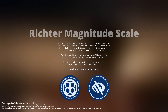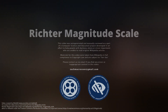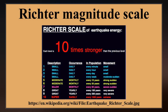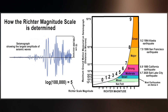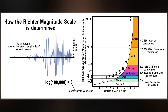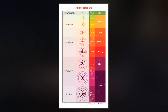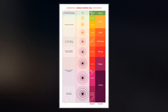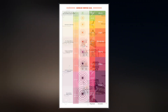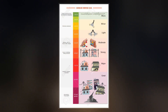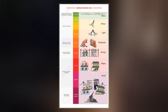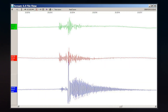The Richter scale, also called the Richter magnitude scale or Richter's magnitude scale, is a measure of the strength of earthquakes, developed by Charles F. Richter and presented in his landmark 1935 paper, where he called it the magnitude scale. This was later revised and renamed the local magnitude scale, denoted as ML. Because of various shortcomings of the ML scale, most seismological authorities now use other scales, such as the moment magnitude scale, to report earthquake magnitudes, but much of the news media still refers to these as Richter magnitudes.